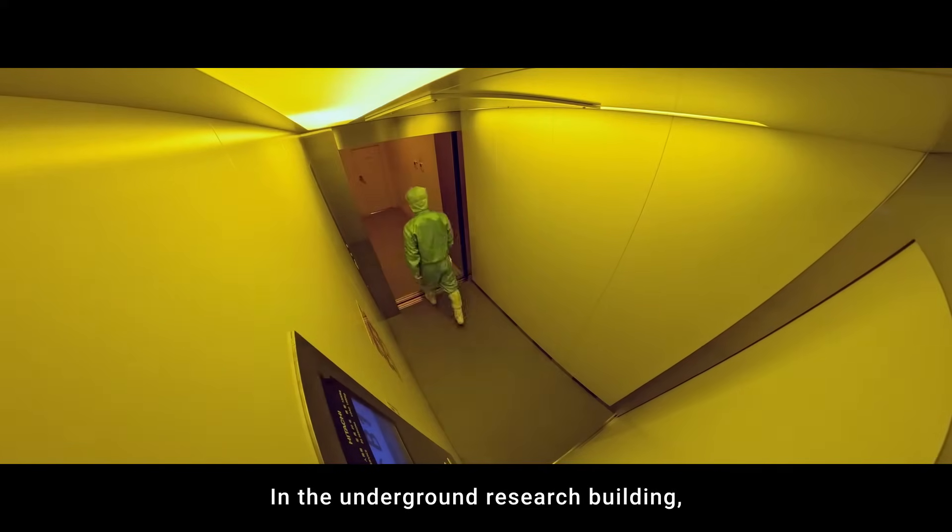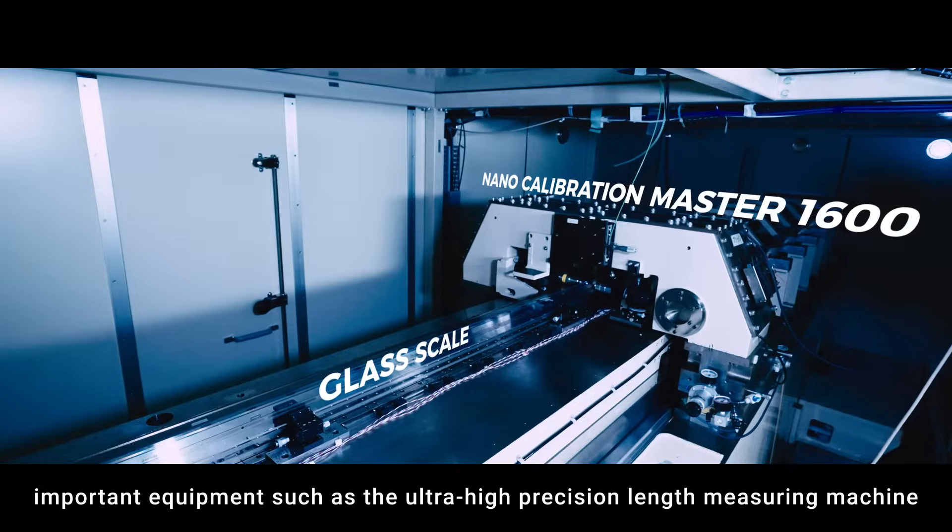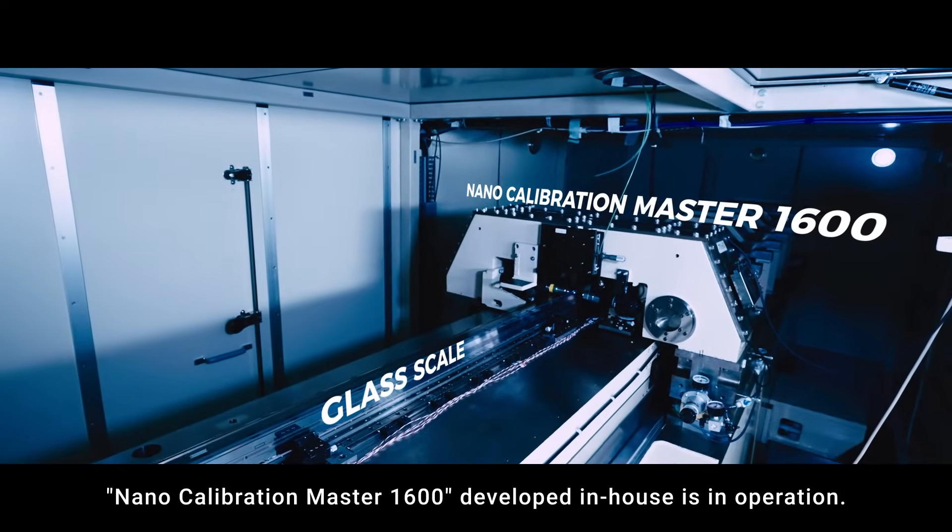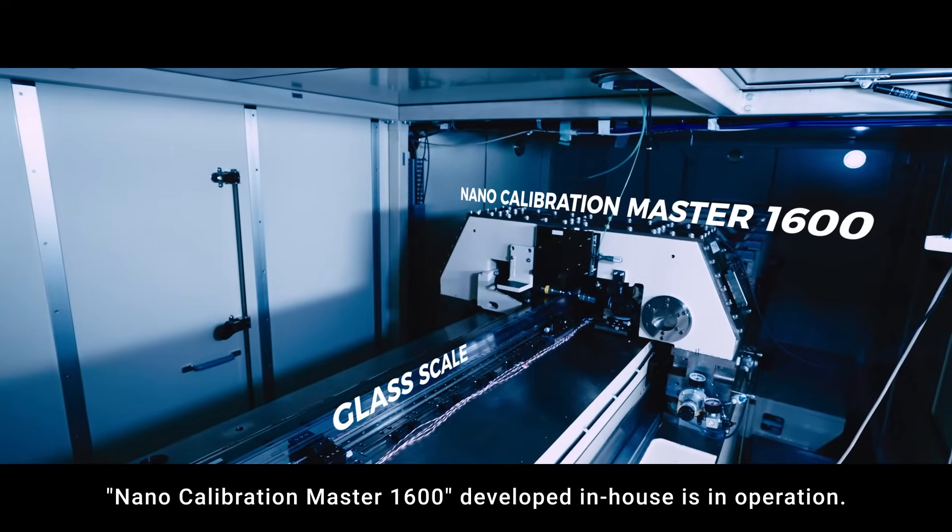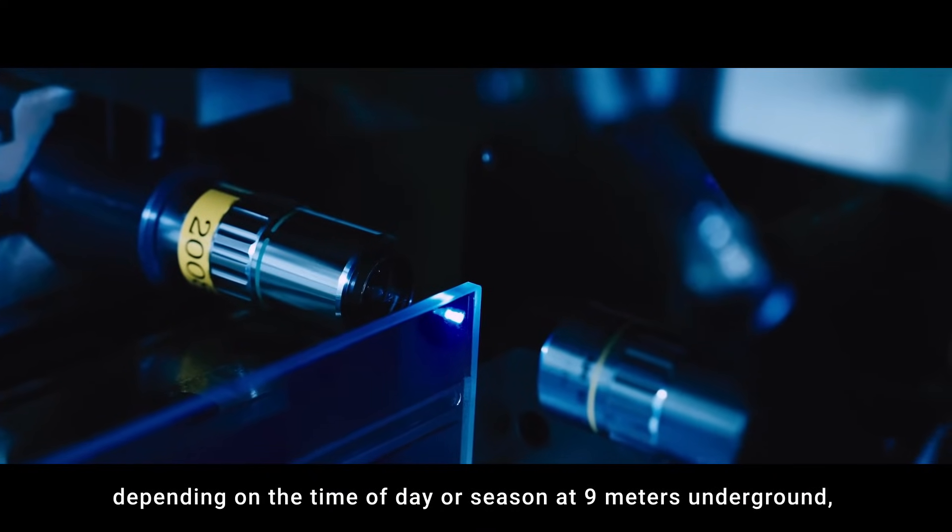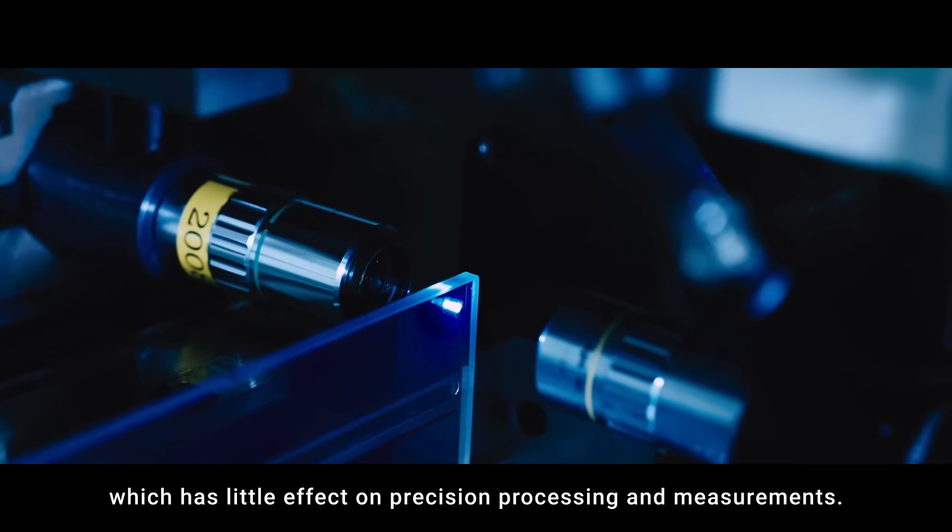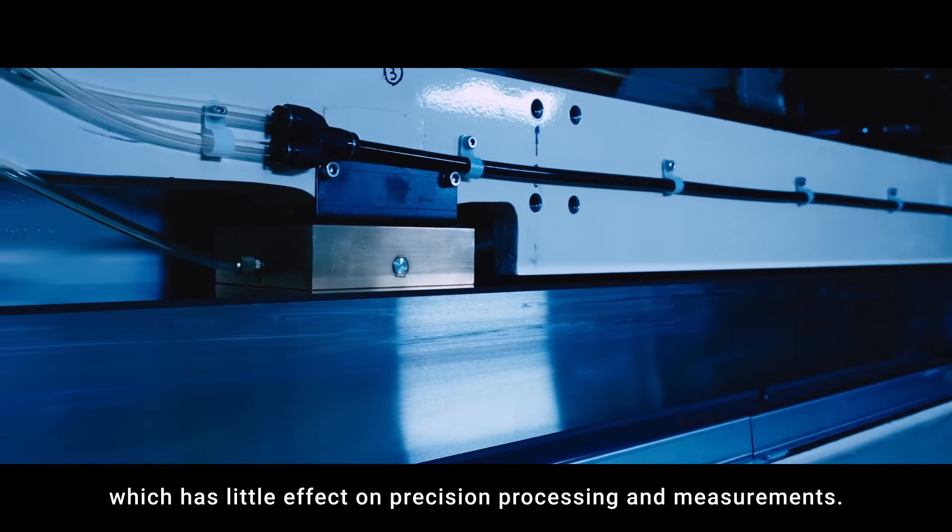In the Underground Research Building, important equipment such as the Ultra High Precision Length Measuring Machine, Nano Calibration Master 1600, developed in-house, is in operation. This is because there is almost no change in temperature depending on the time of day or season at 9 meters underground, which has little effect on precision processing and measurements.